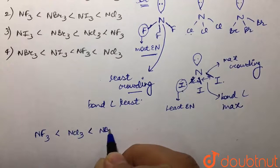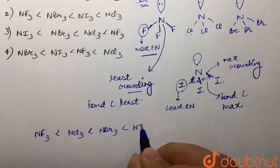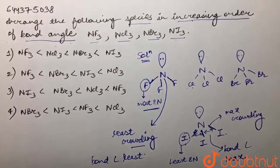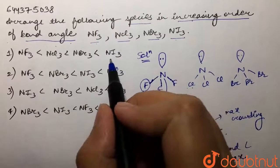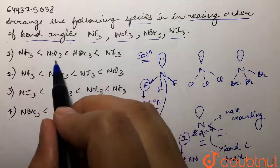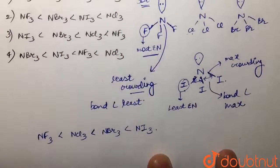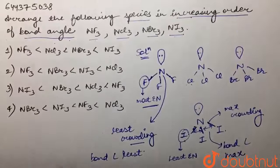Now if we look at our options, the first option is saying that NI3 has maximum bond angle, then NBr3, then NCl3, and then NF3. That is what we have got. So the first option is the correct option.